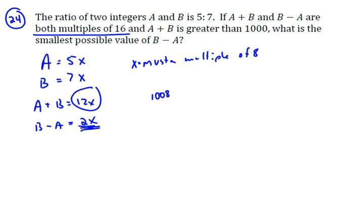The problem with 1008 is that when you divide this by 12, you end up with 84. So x would be 84, but 84 is not a multiple of 8. We need the next number greater than that that is a multiple of 8, which would be 88. So x has to equal 88.